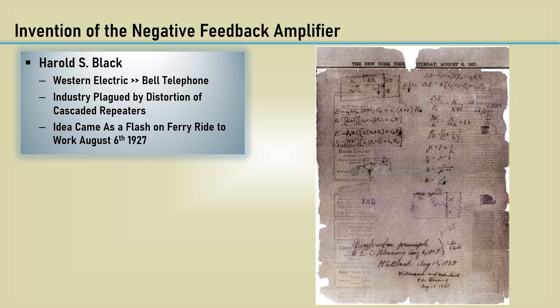He opened his morning newspaper to a page in the New York Times that was nearly blank where the ink did not press well. He proceeded to sketch a canonical diagram of the negative feedback amplifier plus the equations for the amplification with feedback. The date is clear on the newspaper, and it was witnessed and understood by a Bell Labs employee that very day.